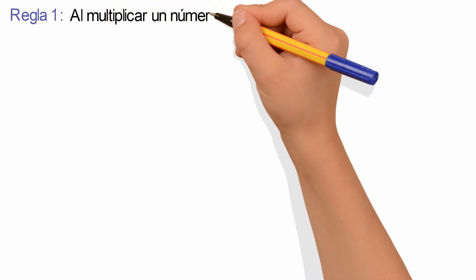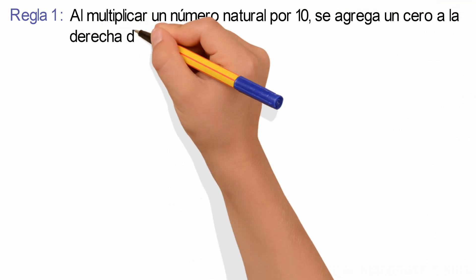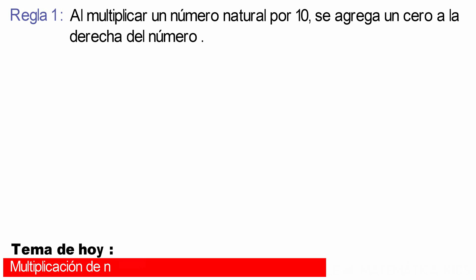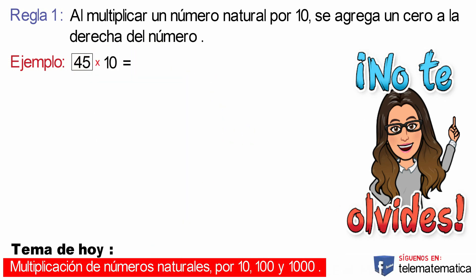Regla número 1. Al multiplicar un número natural por 10, se agrega un cero a la derecha del número. Veamos un ejemplo: 45 multiplicado por 10. Aplicando la regla, escribimos el número 45 y le agregamos el cero del número 10, cuyo resultado sería 450.